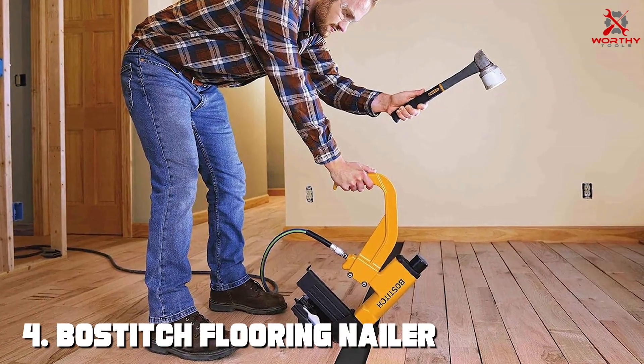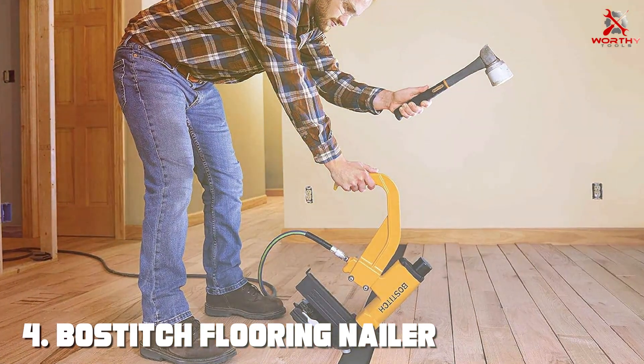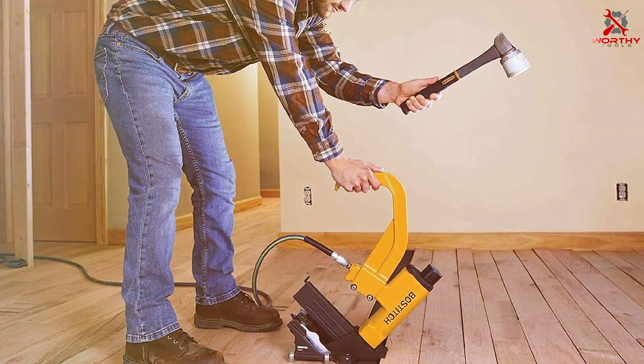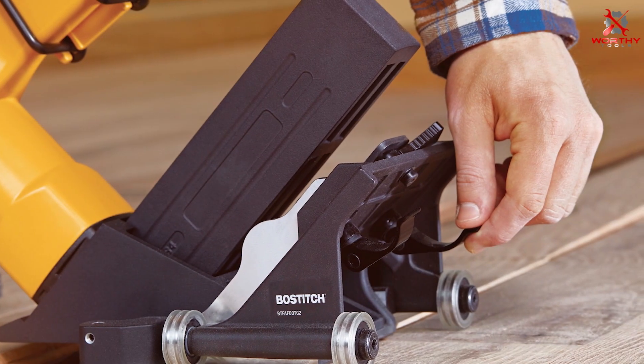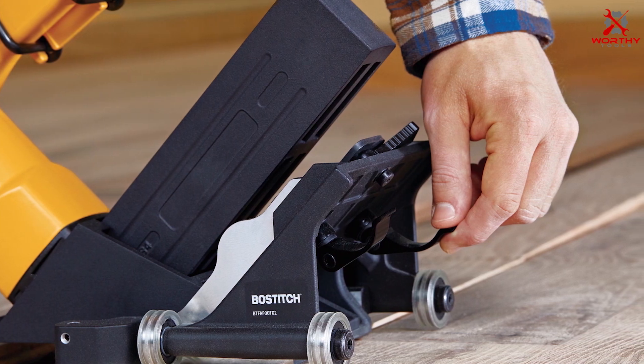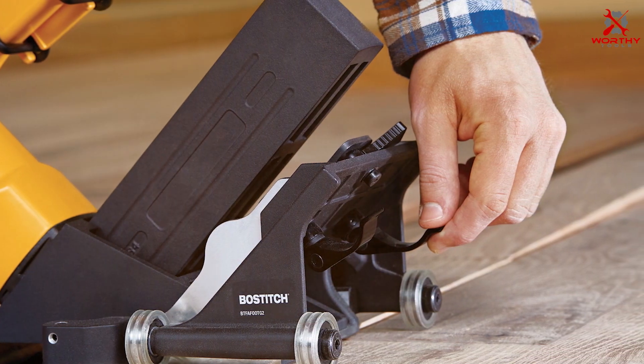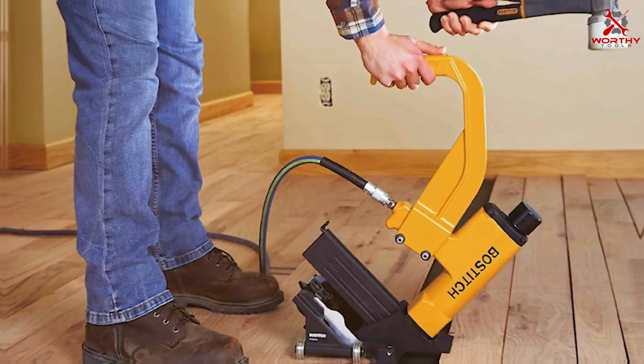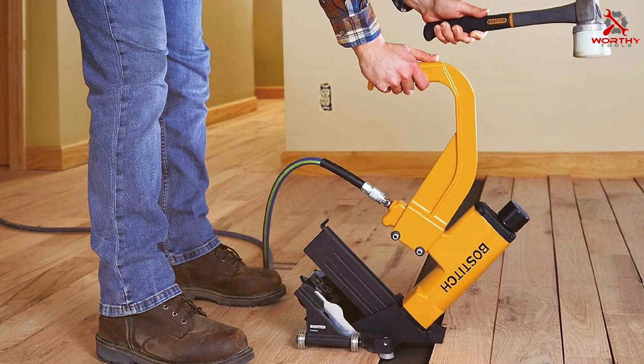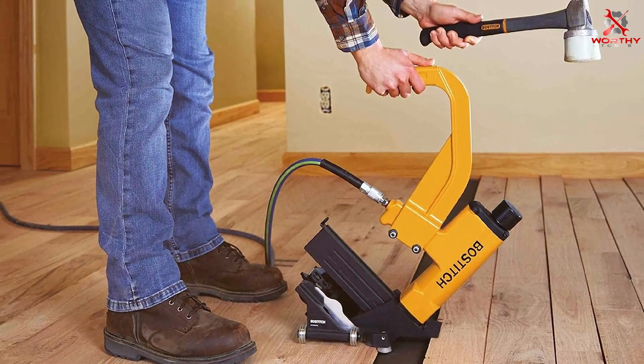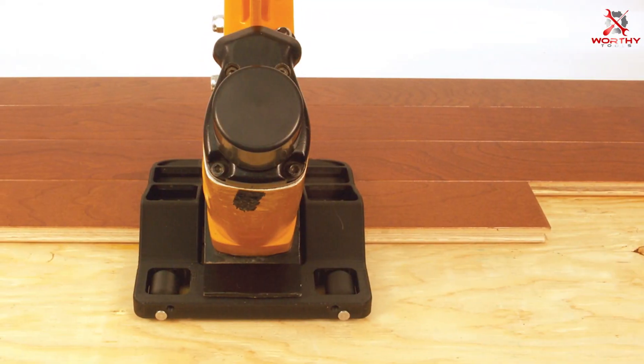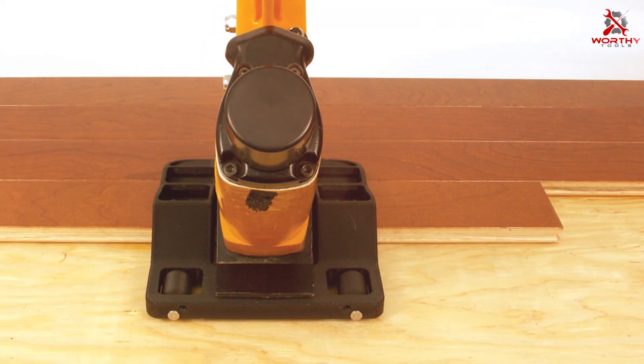Number four: BOSTITCH Flooring Nailer Rolling Base BTFAFOOTG2. The BOSTITCH BTFAFOOTG2 stands out with its innovative rolling base design, a feature that dramatically enhances maneuverability and user comfort. This flooring nailer is designed to work in tandem with other BOSTITCH nailers, transforming them into a mobile, more ergonomic tool. The rolling base allows for smoother, more consistent nailing, especially over large areas, reducing user fatigue.